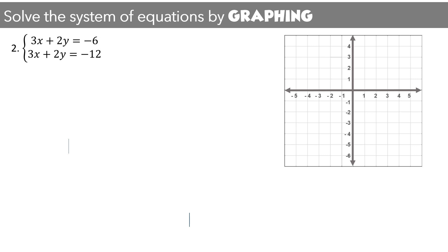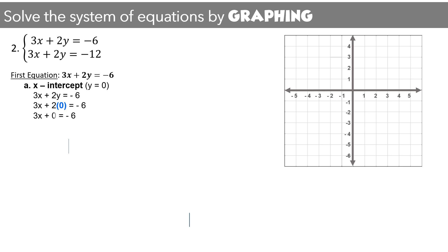Let us have another example. We will graph the two equations by getting their x and y-intercepts. Starting with the first equation, 3x plus 2y equals negative 6: to get the x-intercept, make y equal to 0. Cancelling 2 times 0, we have 3x equals negative 6. Dividing both sides by 3 gives x equals negative 2. The ordered pair is (−2, 0).